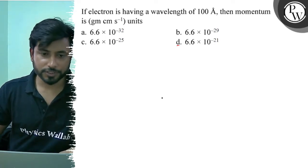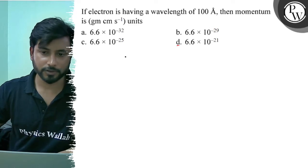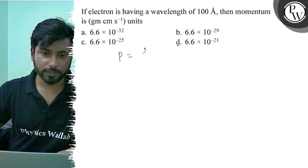Option a: 6.6 × 10^-32, option b: 6.6 × 10^-29, option c: 6.6 × 10^-25, option d: 6.6 × 10^-21. So momentum will be p = h/λ.